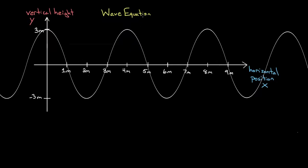So what should our equation be? Maybe it should be an equation for the vertical height of the wave that's at least a function of the position, so that I get a function where I can plug in any position I want — say x equals zero — and it should tell me that's at three. So this wave equation should spit out three when I plug in x equals zero. When I plug in x equals one, it should spit out a y value of zero.